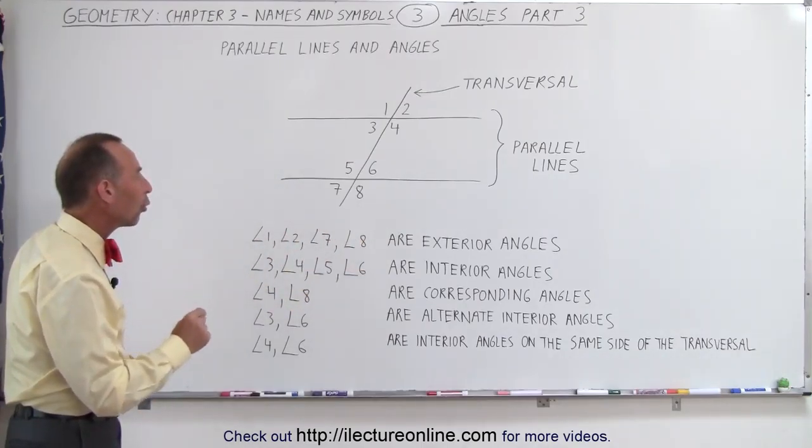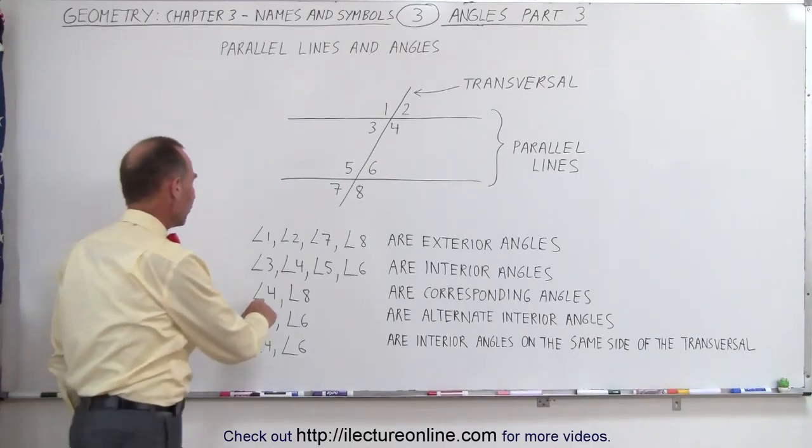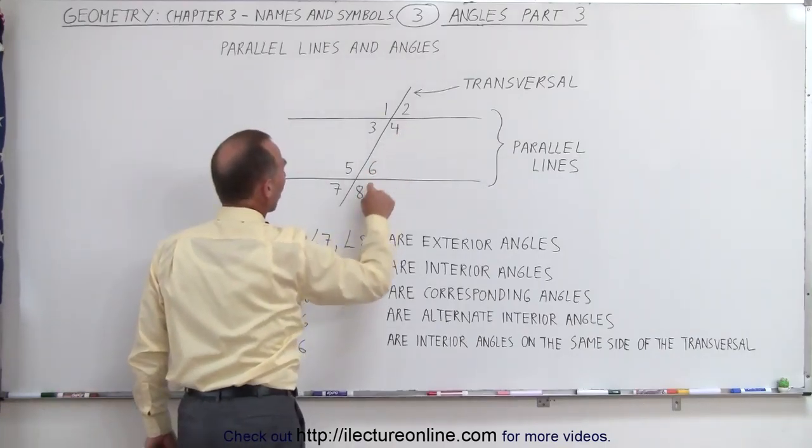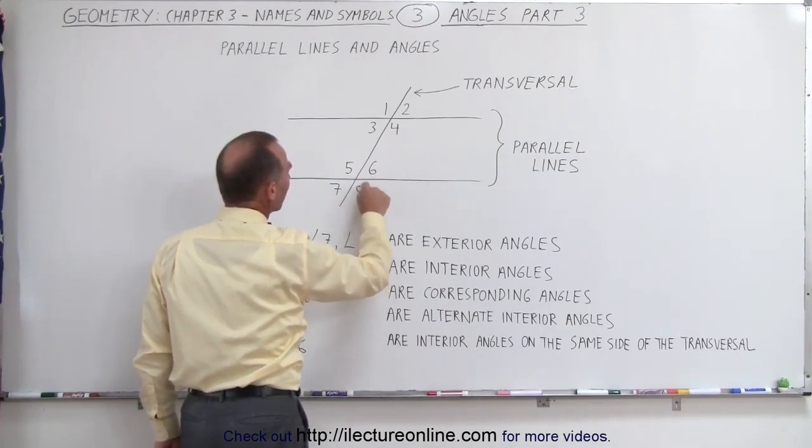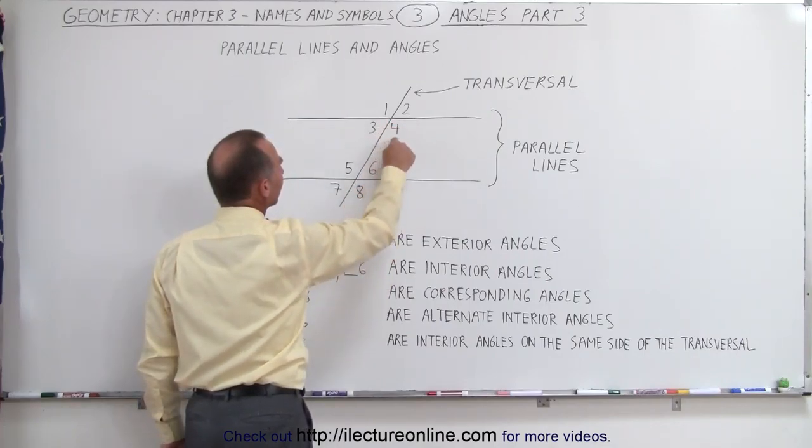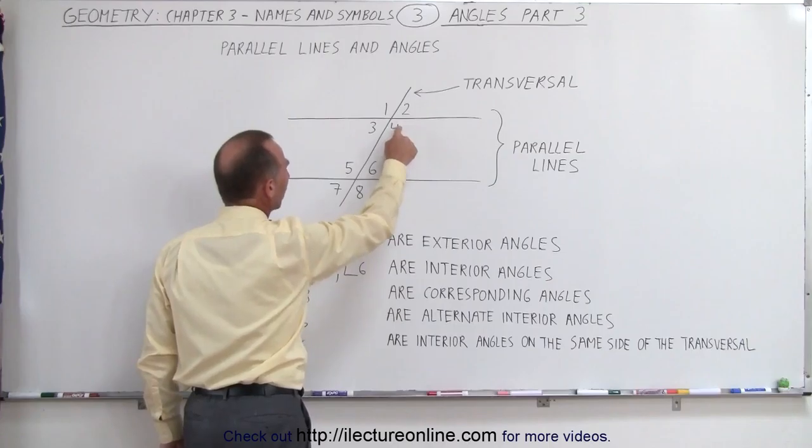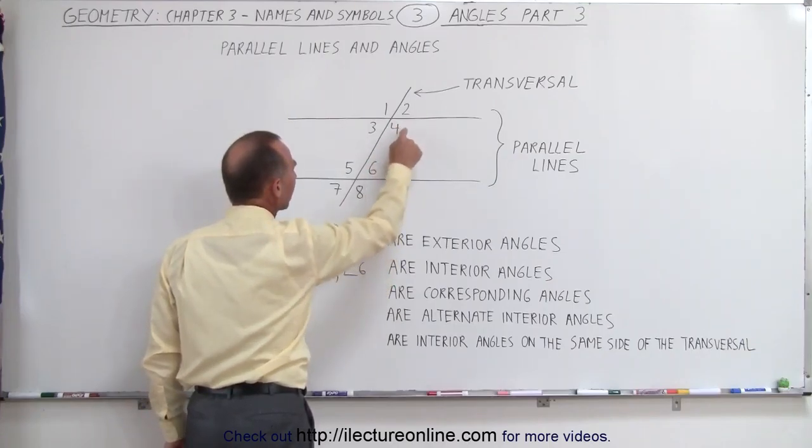We also have what we call corresponding angles. Number four, number eight, these two are corresponding angles. Notice that the angular size of eight must be exactly the same as the angular size of four. So four and eight are corresponding angles.